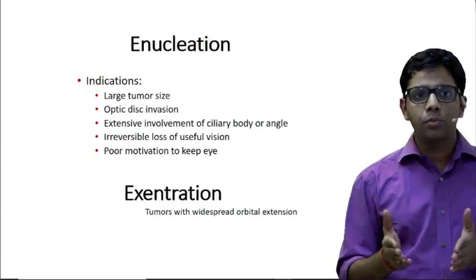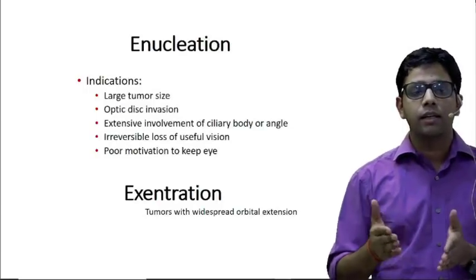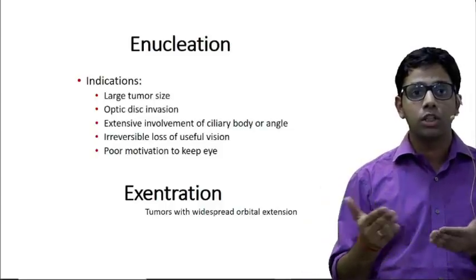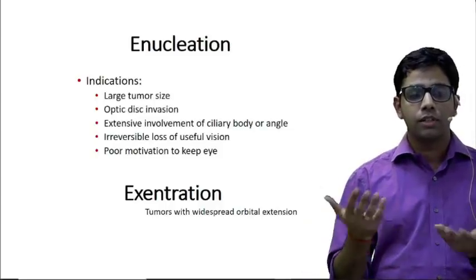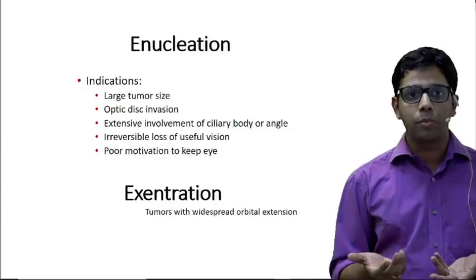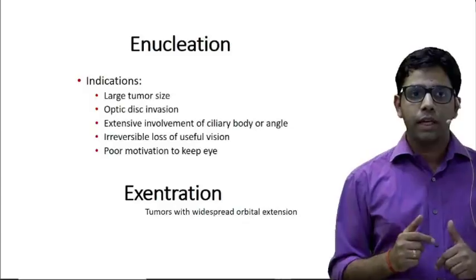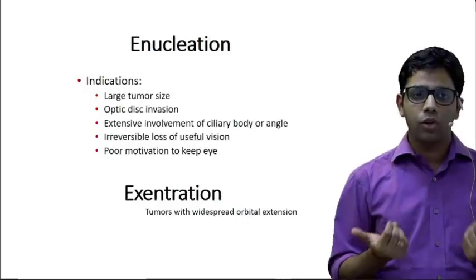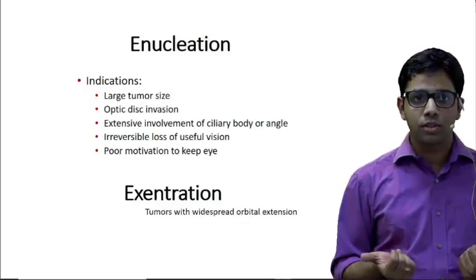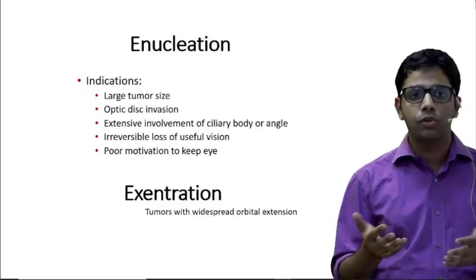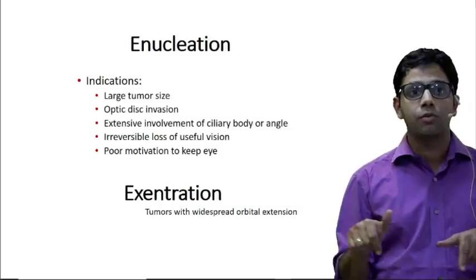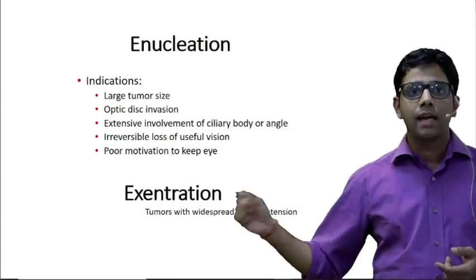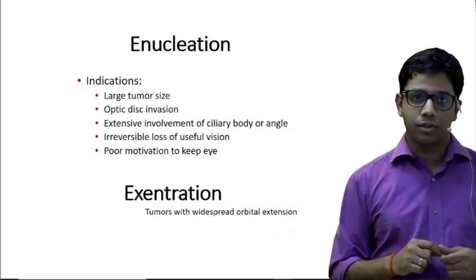If there is local spread involving the sclera or orbit, we remove the eyeball along with the orbital tissues — muscles and sometimes parts of bone and eyelids as well. That surgery is known as exenteration.